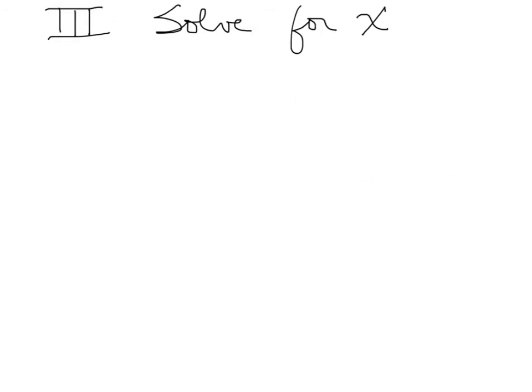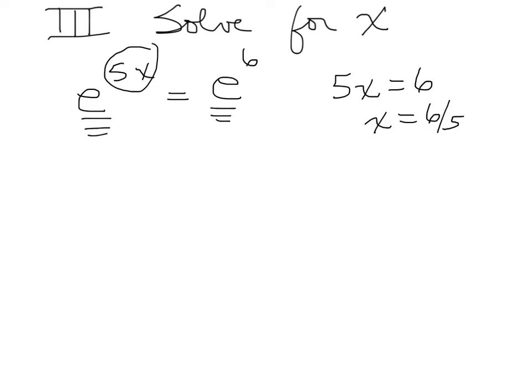Our job in this section is to solve for x using unique base. What if I had e^5x and that equals e^6? Since I have the same base, in order for the left side to equal the right side, my exponents have to be equal. So 5x has to equal 6, so x equals 6/5. Notice I didn't say anything about canceling out the e's. Your attention is focused up here on the exponents.